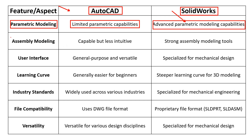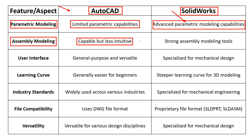Assembly Modeling: AutoCAD allows for assembly modeling, but it might not be as intuitive and feature-rich as SOLIDWORKS. AutoCAD lacks some of the advanced assembly tools that are standard in SOLIDWORKS. SOLIDWORKS excels in assembly modeling, providing tools for creating and managing complex assemblies. It includes features like interference detection, mate constraints, and assembly motion simulation.